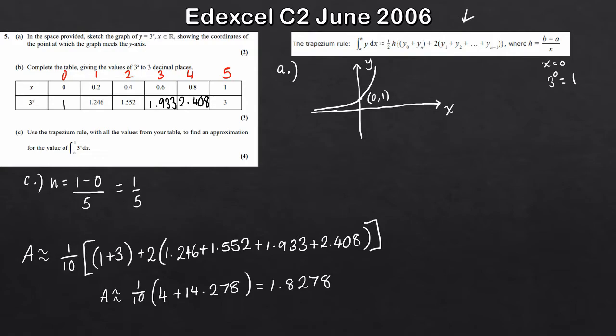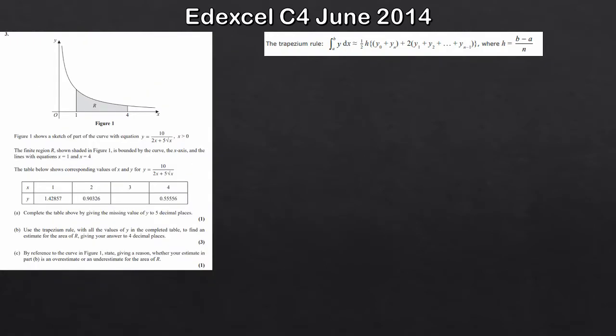So overall, this chapter, this topic, is more of a calculator exercise. As long as you can plug things into your calculator correctly, it's really easy marks. So let's take a look at a question there where we've got a slightly more difficult function. We've got this equation here, y equals 10 divided by 2x plus 5 root x. So the first part is just completing the table again. Part B then, now we're then using the trapezium rule. And then part C, this is a question that can come up, you know, quite often. It's asking whether our estimate in part B, so our approximation for the area, is either an overestimate or an underestimate. So we'll discuss how do we kind of understand when it's which, when we get to that part.